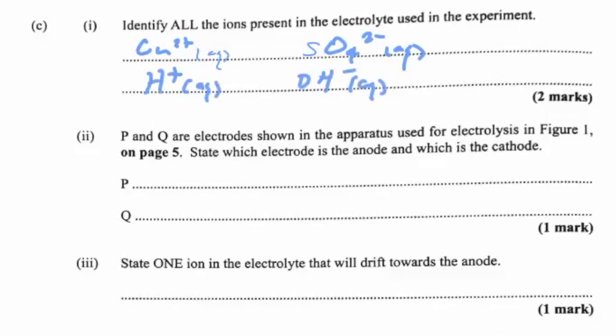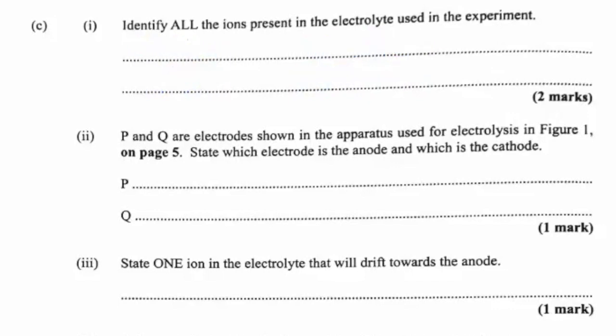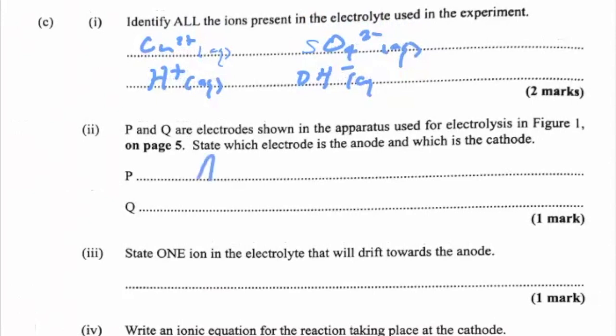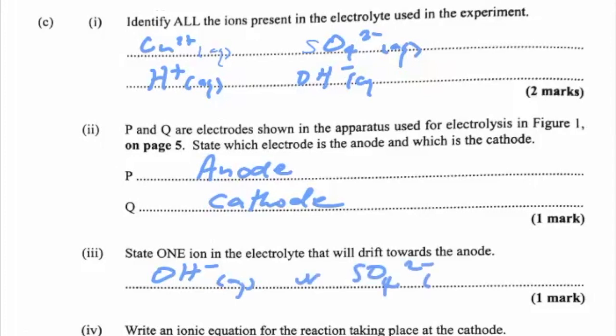P and Q are electrodes in the apparatus used for electrolysis in Figure 1. P is the anode and Q is our cathode. For the ion that will drift towards the anode — the anode is positive — so we'd have OH⁻ ions or sulfate ions drifting over there.